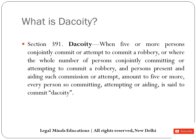In Section 391, unlike in robbery where there was no number of people mentioned, in dacoity there are five or more people who co-jointly decide to commit or attempt to commit a robbery in a particular place. The whole number of persons co-jointly committing or attempting to commit a robbery, and any person present and aiding such commission, are covered. It is not necessary that the robbery is done by five people physically involved.